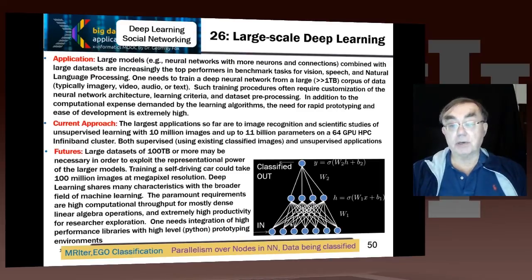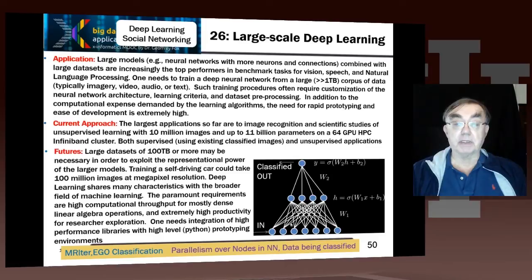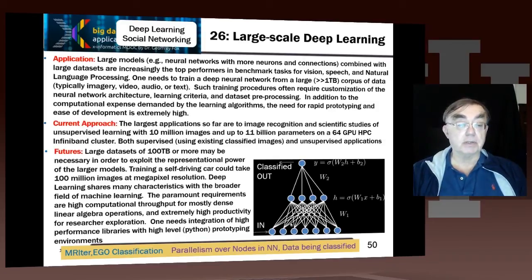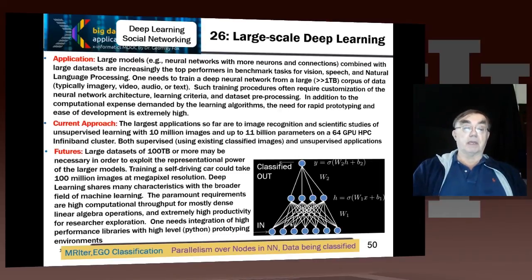These are hugely computationally intense. This particular application — the face recognition — had 11 billion parameters. It was implemented with 10 million images on a 64 GPU HPC cluster. It did not use clouds because it used MPI with low latency, high performance communication.